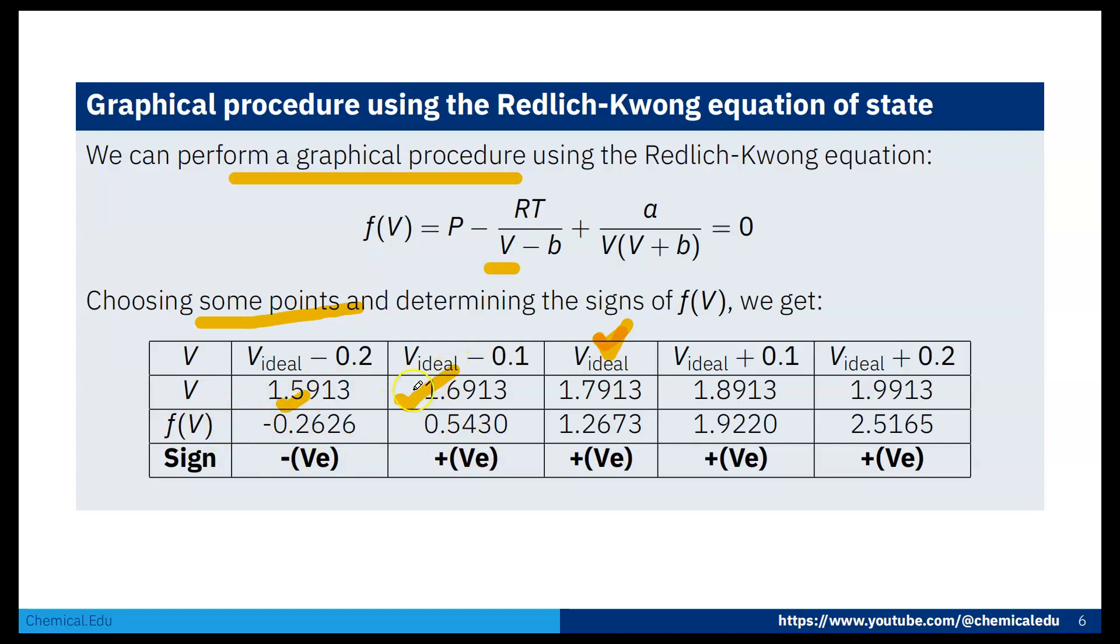For some V values, f of V is negative and for another it's positive. The root will lie between the positive and negative values. When this happens, we can plot that and get the answer. We can also do the bisection method.